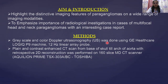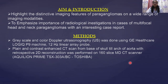The aim and introduction of my paper will be to highlight distinctive imaging features of paraganglioma using a wide range of imaging modalities, and to emphasize the importance of radiological investigations in the case of multifocal head and neck paragangliomas. The methods used are USG using GE Healthcare Logic P9 machine with a 12 MHz linear probe, and CT neck scan done using a Toshiba 160-slice scanner.